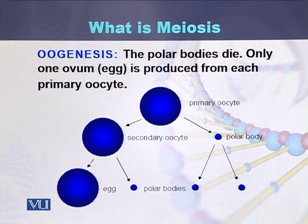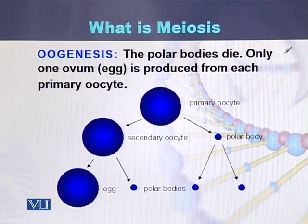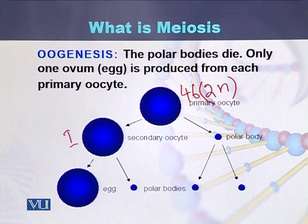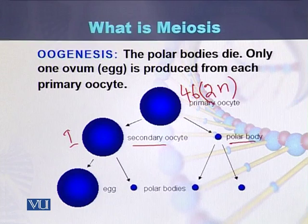In the case of females, meiosis is called oogenesis. As a result of oogenesis, there is a primary oocyte. This primary oocyte contains 46 chromosomes, or 2n — two sets of chromosomes. As a result of meiosis 1, this primary oocyte is converted into a secondary oocyte and a polar body. Each of these two cells contains 23 chromosomes, meaning 1n.